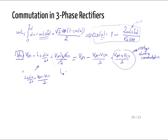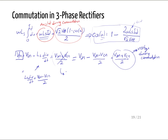Similar to the single-phase commutation analysis, the area lost during commutation is Au = ω·Ls·ID. This is the area lost in the output voltage waveform during each commutation event.